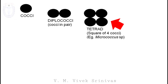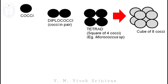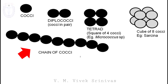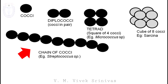Cocci can be arranged in a cube of eight; the example being Sarcina. The cocci can also be arranged in a chain — the example being Streptococcus species — and cocci can be arranged in clusters, the example being Staphylococcus species. These are some arrangements observed in cocci.